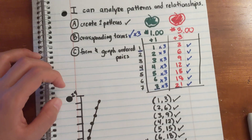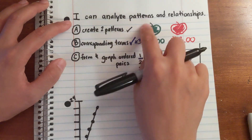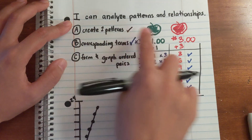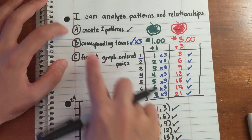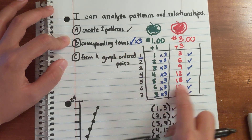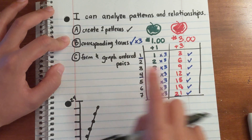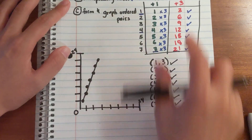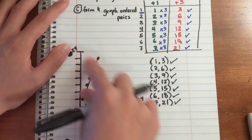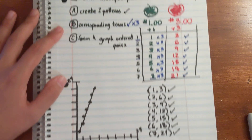Let's quickly review. I can analyze patterns and relationships — three steps. First, create two patterns. Check. Second, find the relationship between the corresponding terms. Check. Third, take those terms, create them into ordered pairs, and then graph them. And that's it.